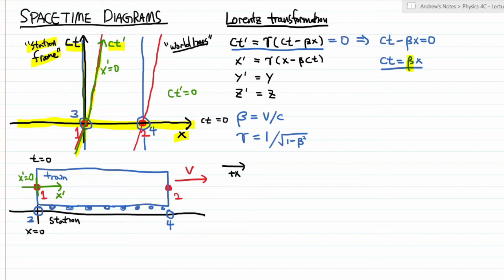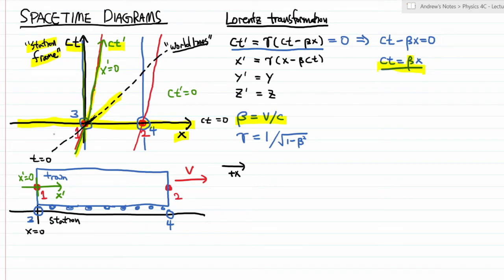It's easier to see what that looks like if I first draw a line with a slope of one — that would represent the world line of something moving at the speed of light. So this dotted line represents how quickly light moves. Beta being a fraction of the speed of light, the line ct equals beta x will have a lower slope than that. Considering what the world line of the back of the train represents, the set of points defined by this expression looks symmetric: the slope of the x prime axis is beta, and the slope of the ct prime axis is 1 over beta, and graphically these two angles end up being the same.